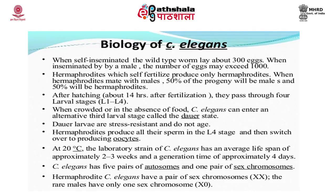When self-inseminated, the wild type worm may lay about 300 eggs. However, on insemination by a male, the number of eggs may exceed 1000. Hermaphrodites with self-fertilization produce only hermaphrodites. When hermaphrodites mate with males, 50% of the progeny is male and 50% hermaphrodites.